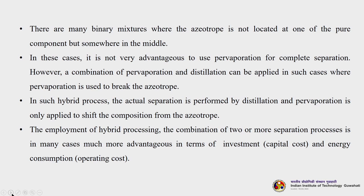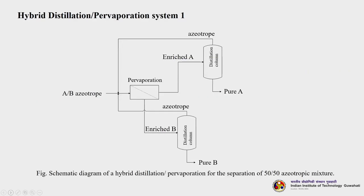A combination of pervaporation and distillation can be applied in such cases, where pervaporation is used to break the azeotrope, and then distillation separates it. In such hybrid processes, the actual separation is performed by distillation and pervaporation is only applied to shift the composition away from the azeotrope. The employment of hybrid processing - the combination of two or more separation processes - is in many cases much more advantageous in terms of capital investment and energy consumption. This is a classical example of separation of a 50-50 azeotropic mixture using a hybrid distillation and pervaporation system.